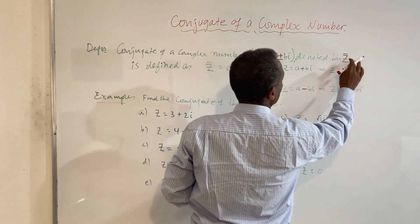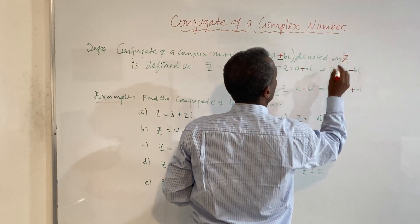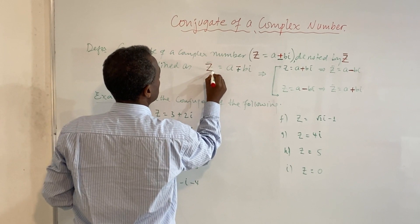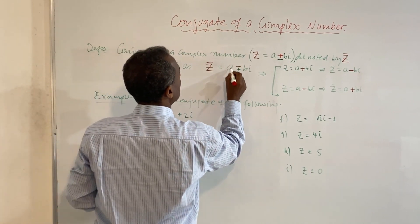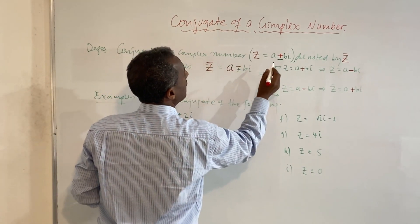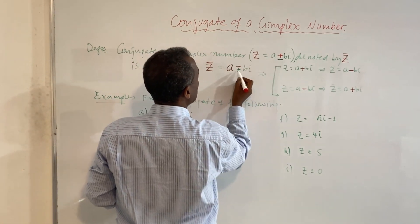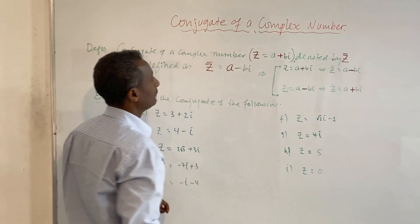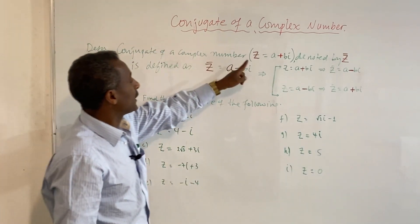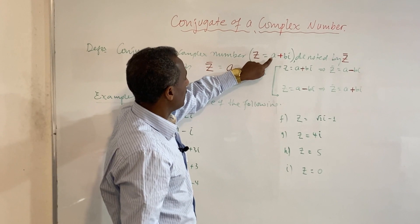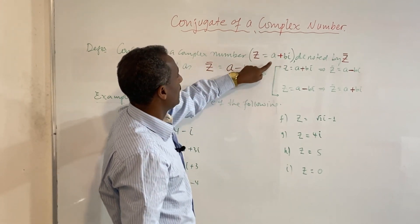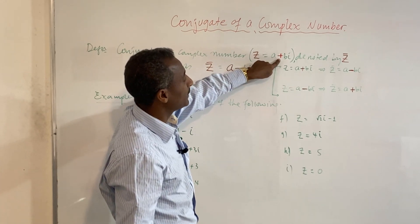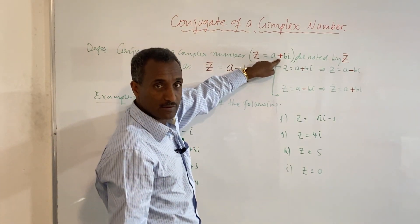Let's check the definition. The conjugate of z, where z equals a plus bi, is equal to a minus bi. So a plus bi is the conjugate of a minus bi. The sign changes from plus to minus.